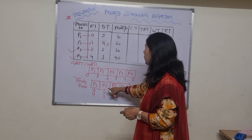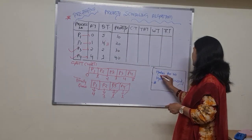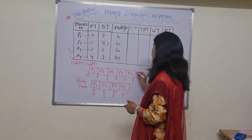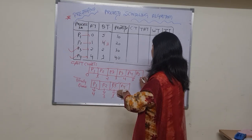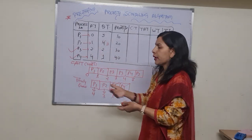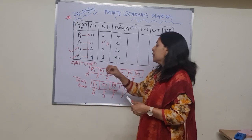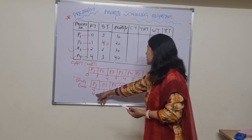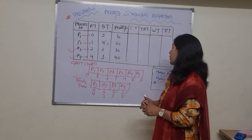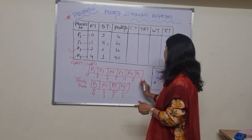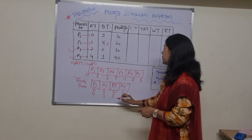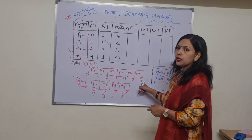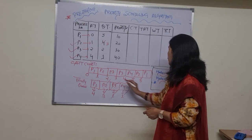Now we check priorities. P1 has priority 10 and P2 has priority 20. Since higher number means higher priority, P2 has the highest priority among the remaining processes. So CPU is allotted to P2 first. Since no new processes are arriving, we can take the complete remaining burst time. P2 runs from five to eight, completing at eight. Then P1 runs from eight to twelve.